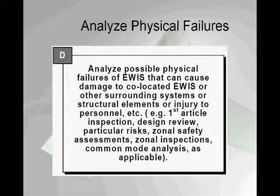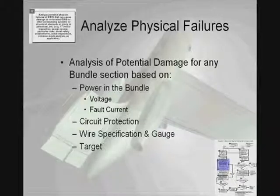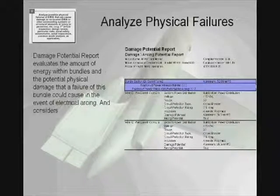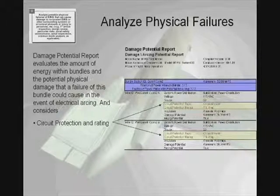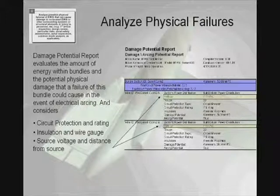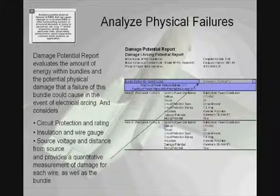Analysis of an aircraft EOS requires that EOS, which can cause damage to surrounding systems, be evaluated. The EOS RAT can perform a damage potential assessment. The damage potential report evaluates the amount of energy within the bundles and how much damage that could potentially cause to the nearby structure. The damage potential includes the circuit protection rating, the insulation and wire gauge information, the source voltage and distance from power source, and provides a quantitative measurement of the damage for each wire as well as the bundle.